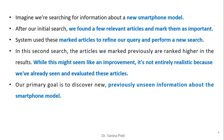For example, imagine we are searching for information about a new smartphone model. After our initial search, we find a few relevant articles and mark them as important. The system uses these marked articles to refine our query and performs a new search. In this second search, the articles we marked previously are ranked higher in the results.